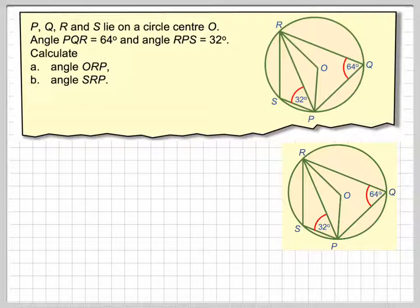So this is a question about circle theorem. We've got points P, Q, R, and S lying on a circle with center O.